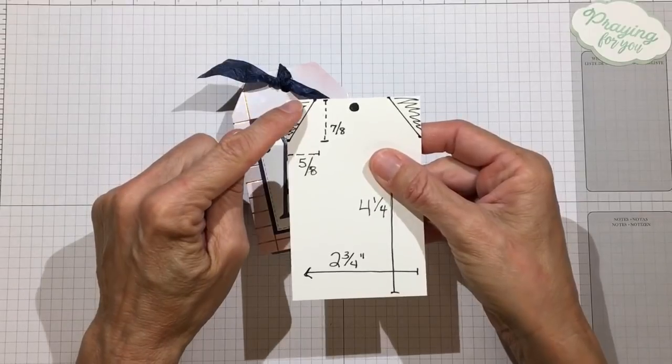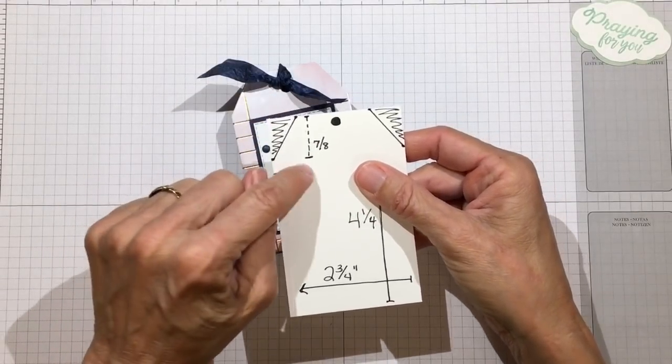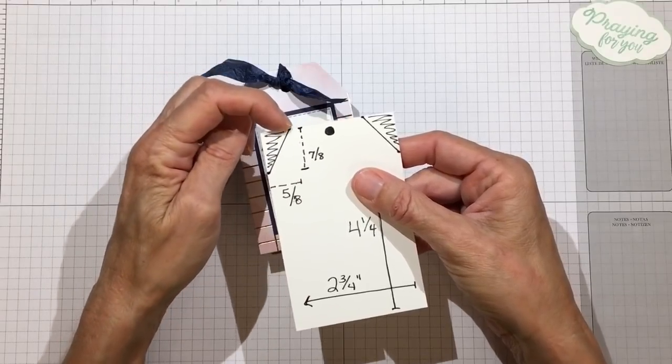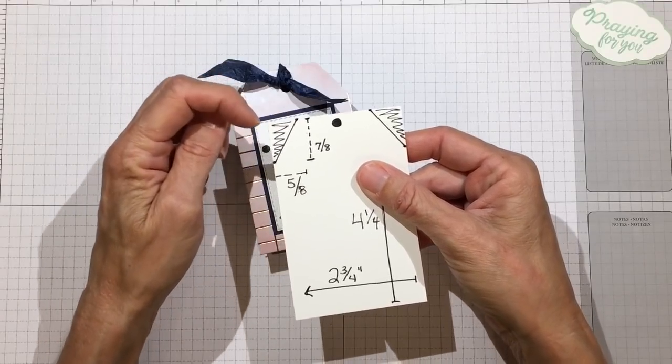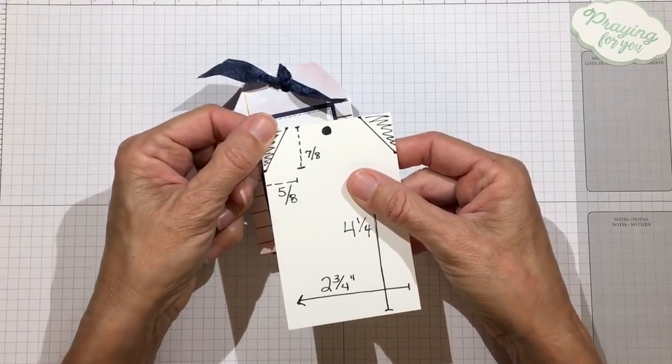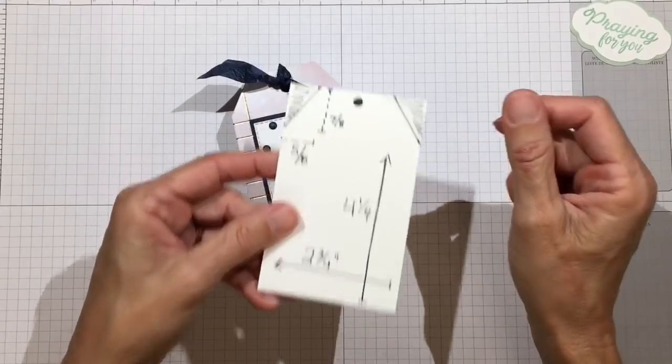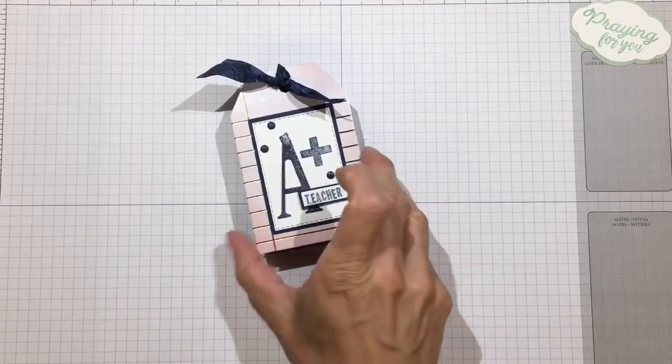If you don't have one of those, the tag itself is 4 and 1/4 inches long by 2 and 3/4 inches wide. If you want to create the exact same shoulders as this tag has, measure over 5/8 inch into the tag on the top and 7/8 of an inch down the side, then cut that corner off and do that on both sides.